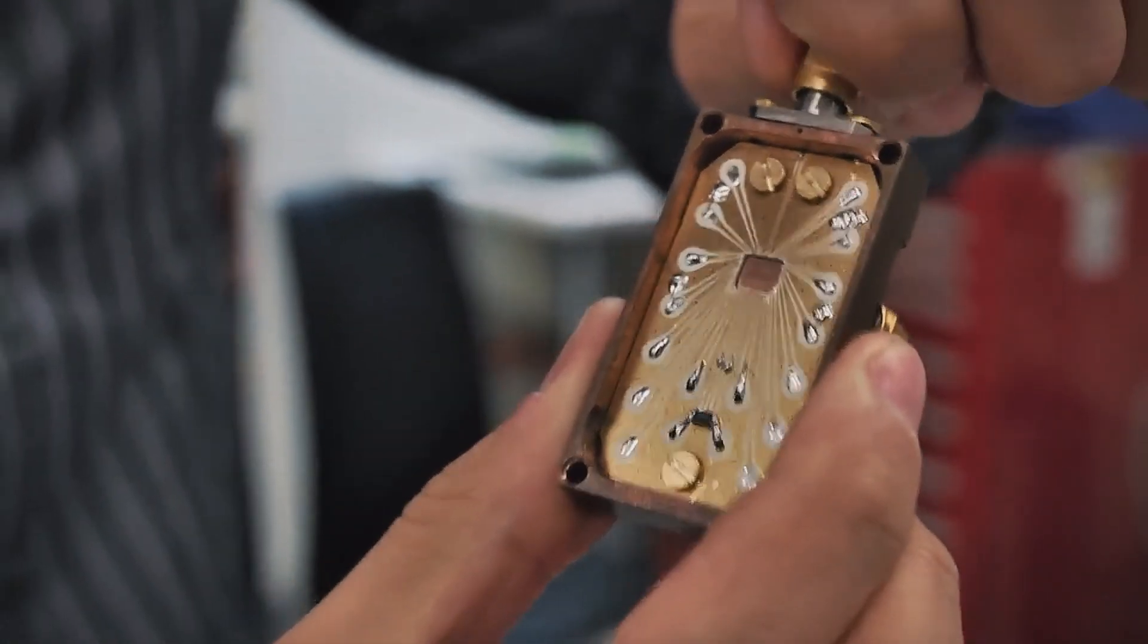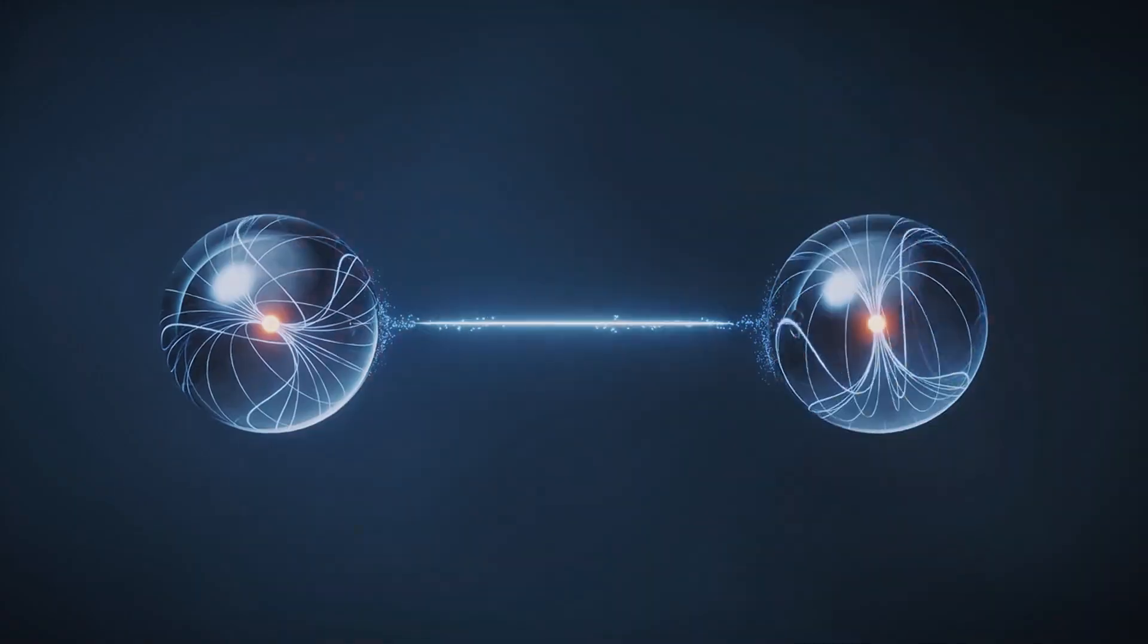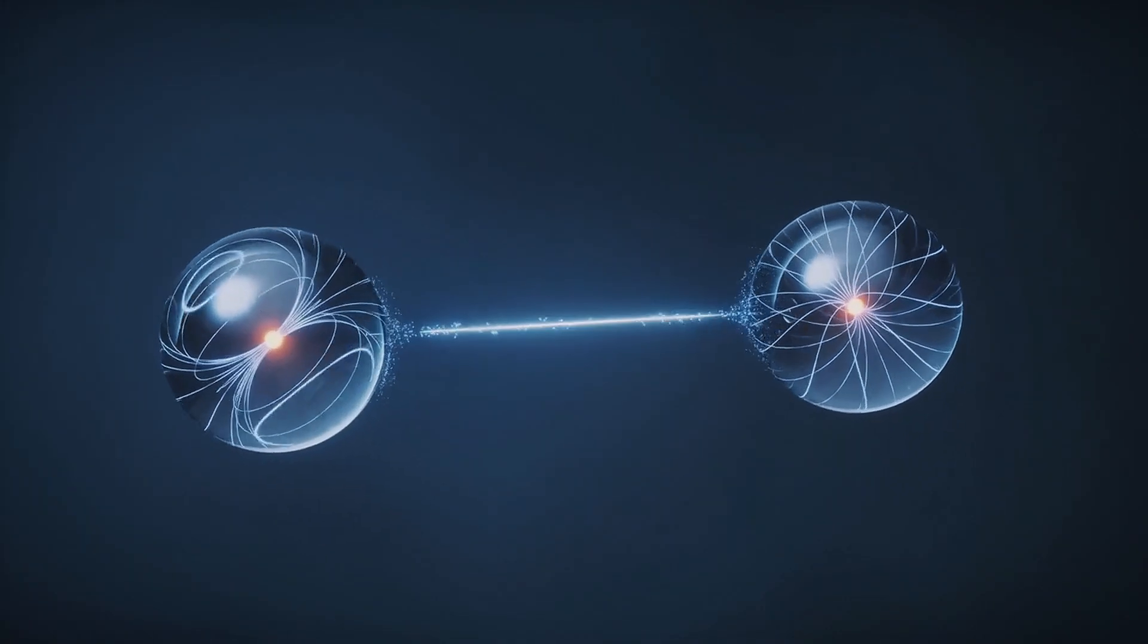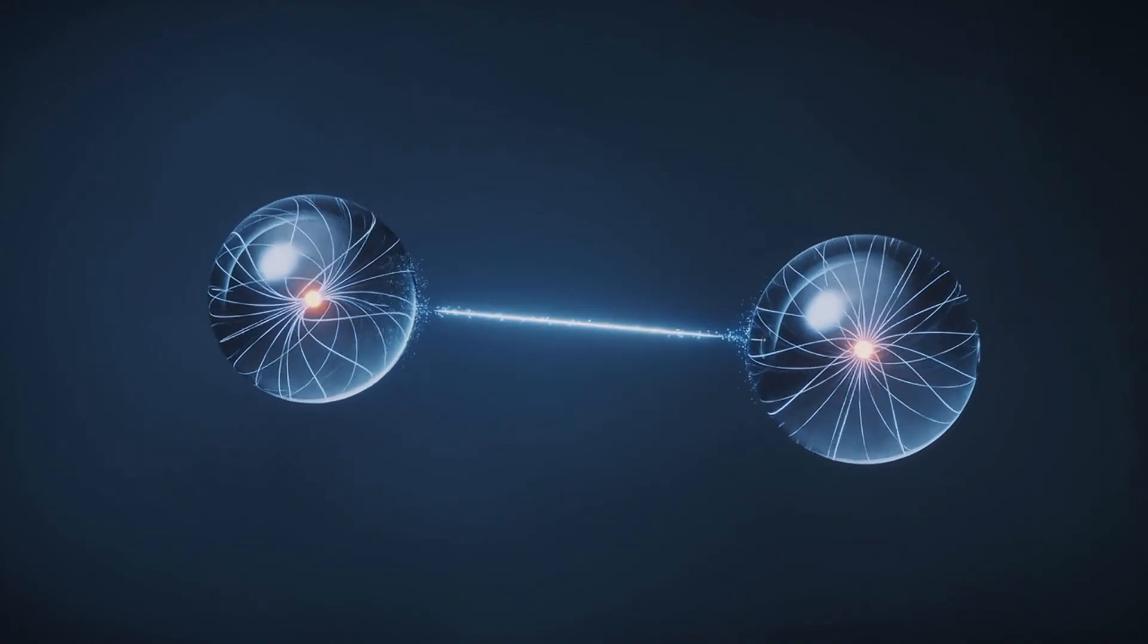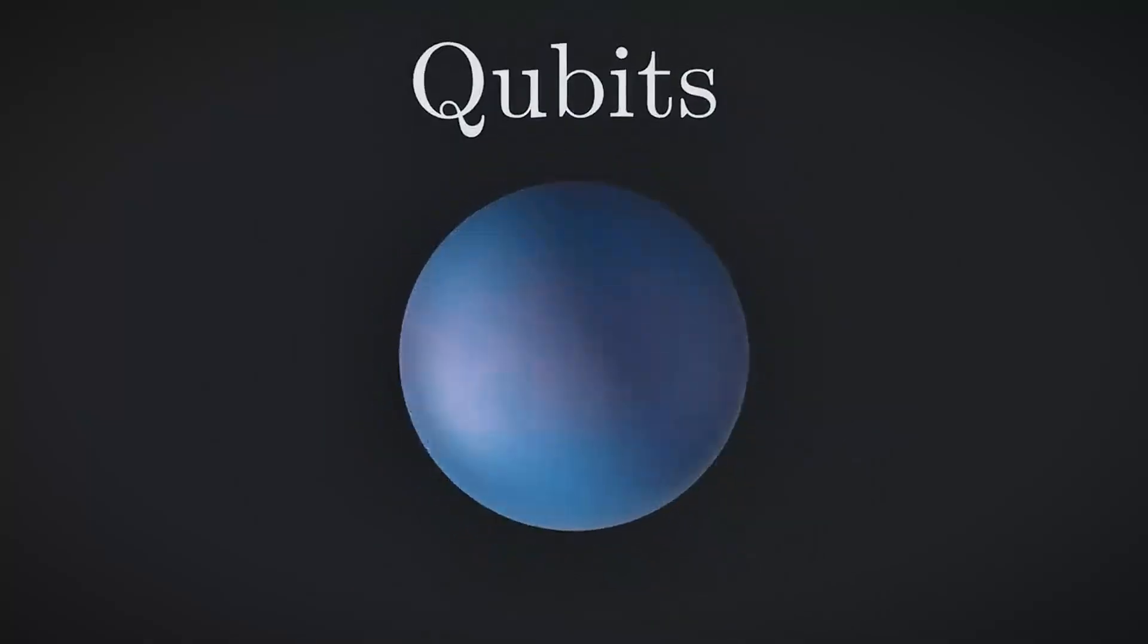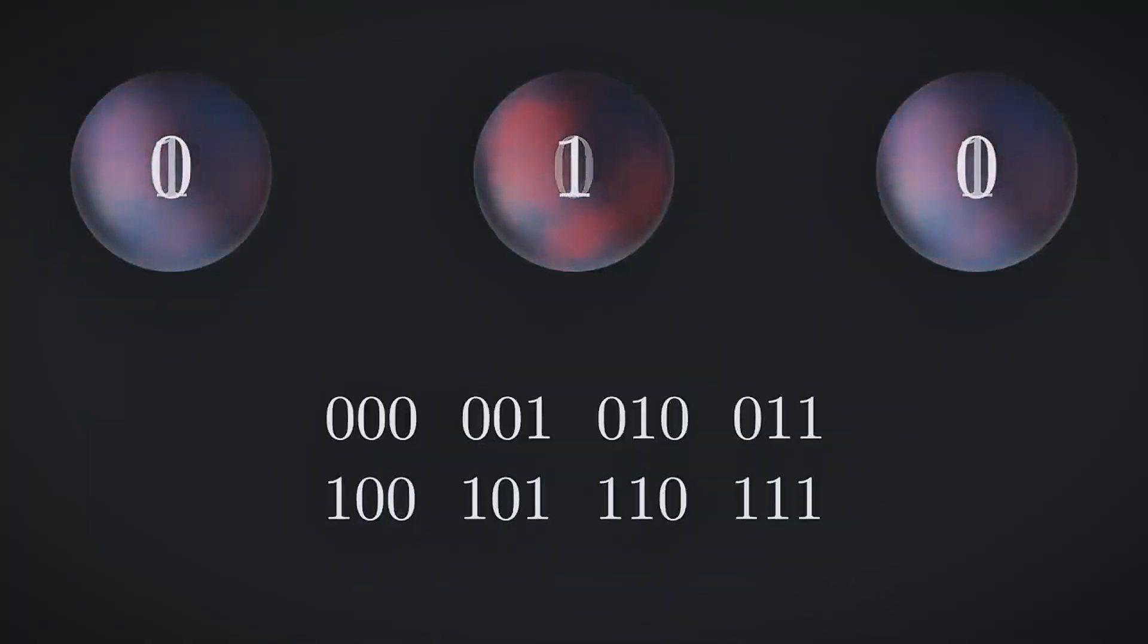But here's where it gets even more intriguing. When qubits get entangled, they form a special bond that's the digital equivalent of finishing each other's sentences, no matter how far apart they are. This quantum entanglement allows them to work together in harmony, making quantum computing not just faster, but smarter.